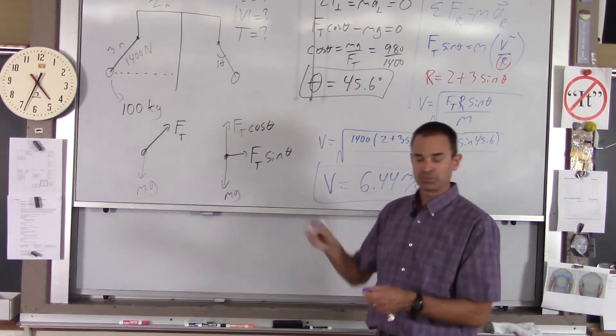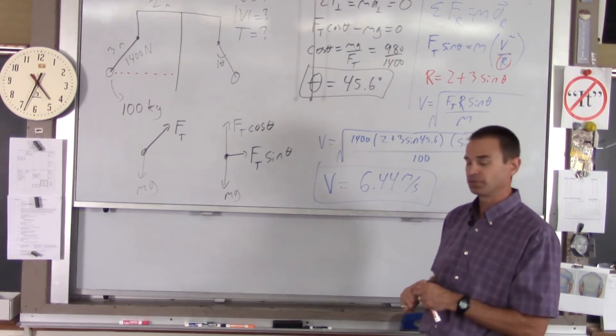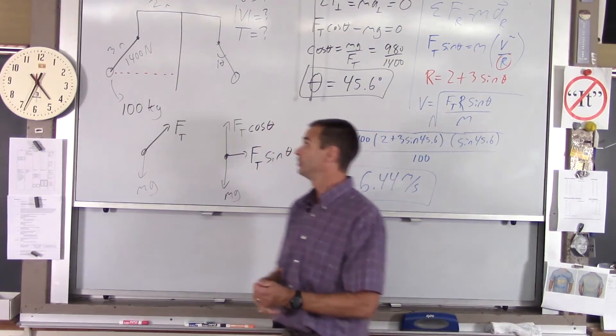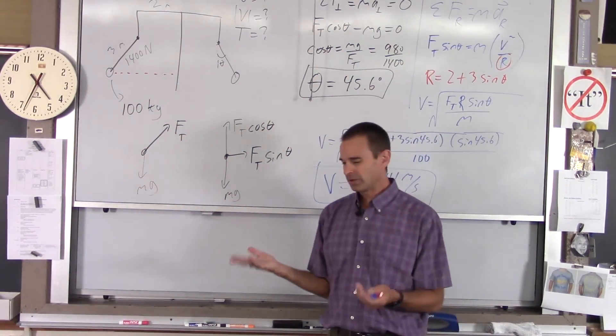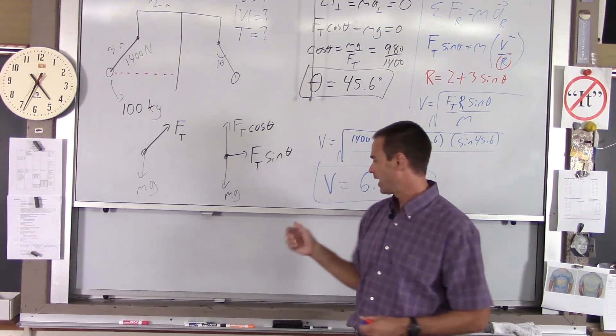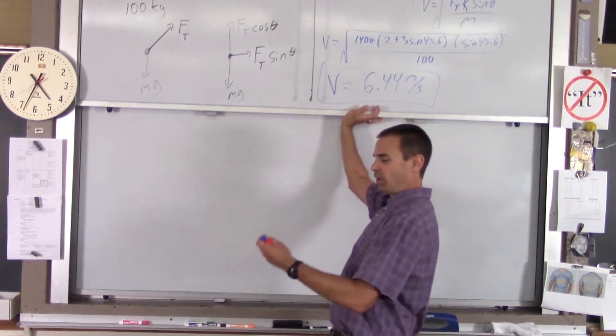So that's the max speed. That's the fastest that person should go. If they go any faster, you're going to exceed 1400 newtons tension, and then who knows what's going to happen. Finally, we want to know how long it takes that person to get around the circle. So that's a pretty easy one.